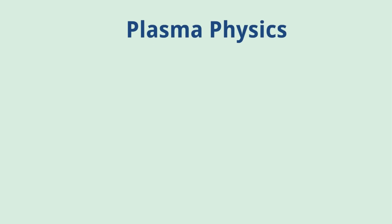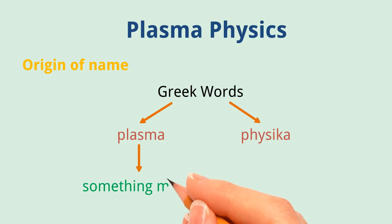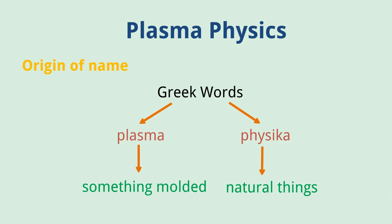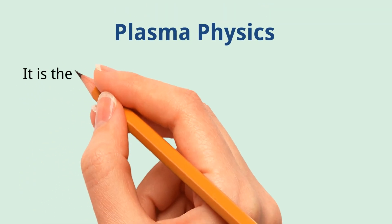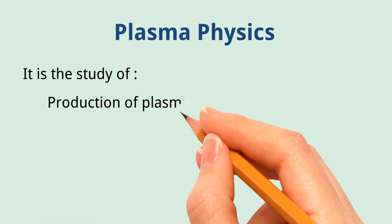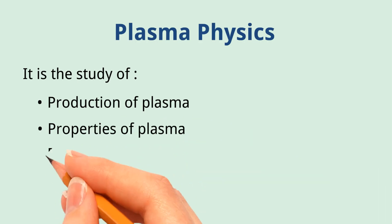Plasma physics. Origin of name: Word plasma physics is derived from Greek words 'plasma' and 'physica'. Plasma means something molded, and physica means natural things. It is the study of production of plasma, properties of plasma, and effects of plasma.